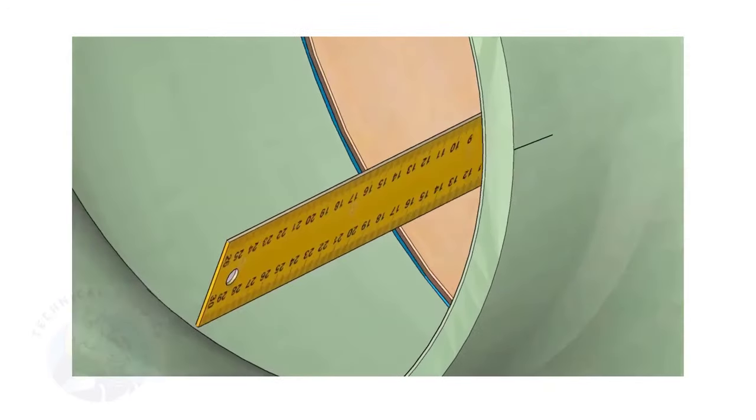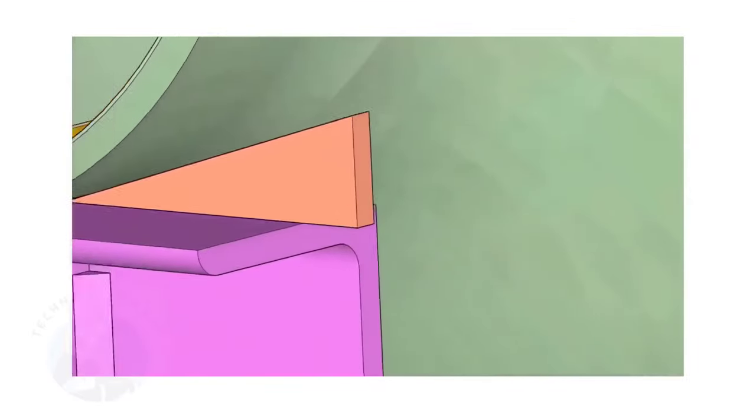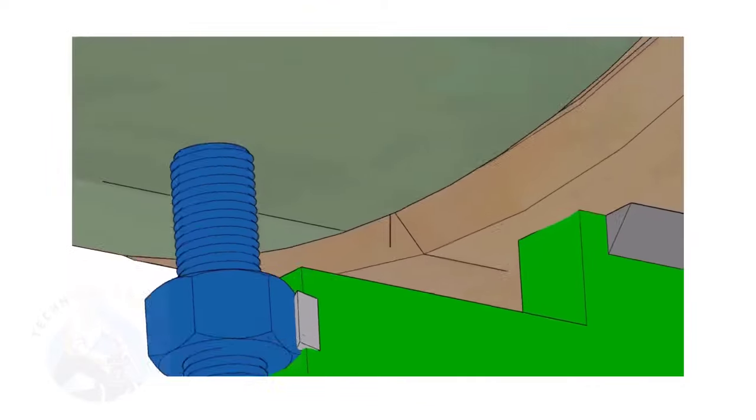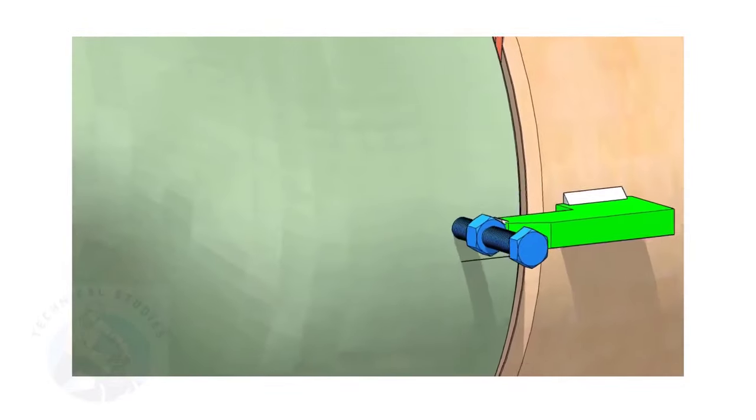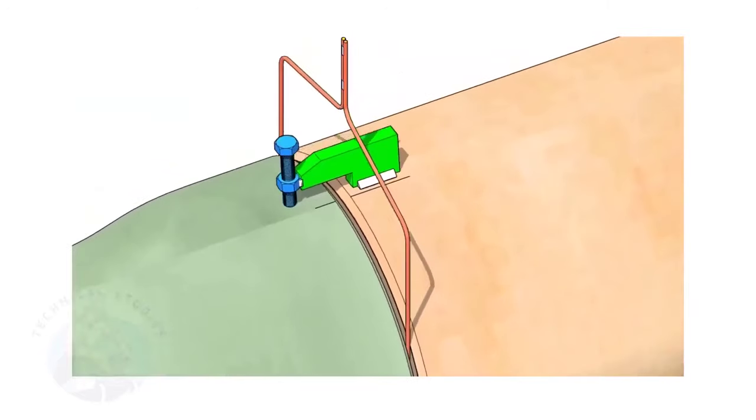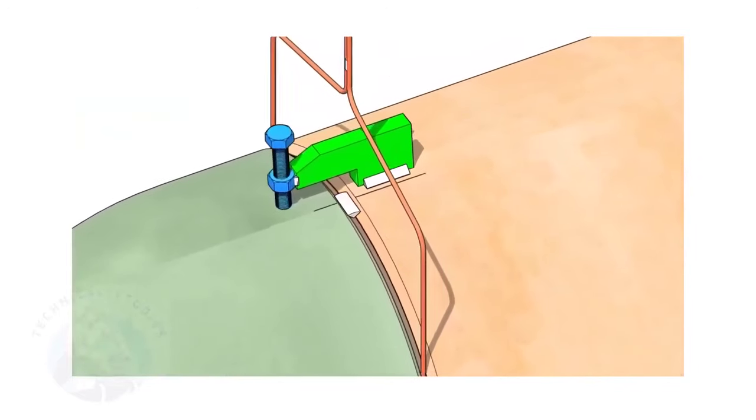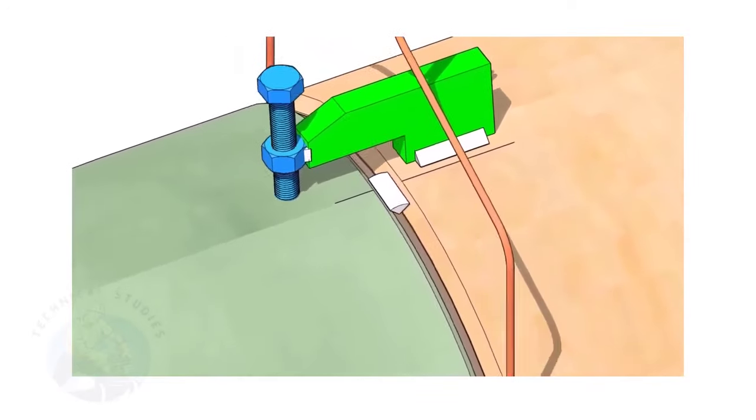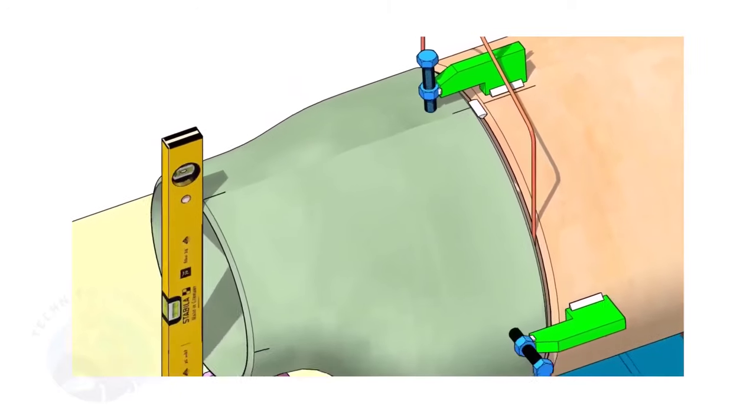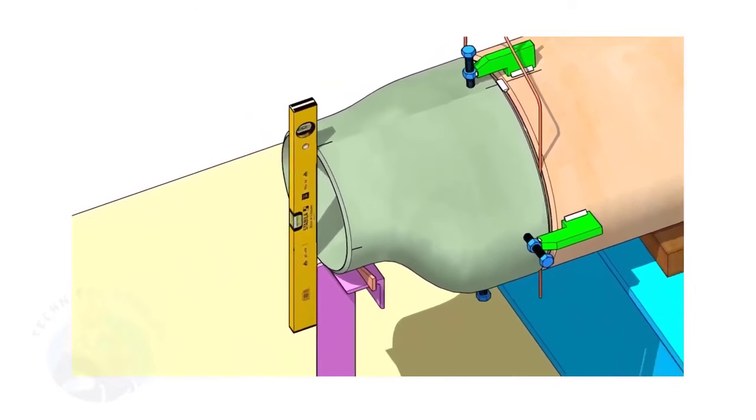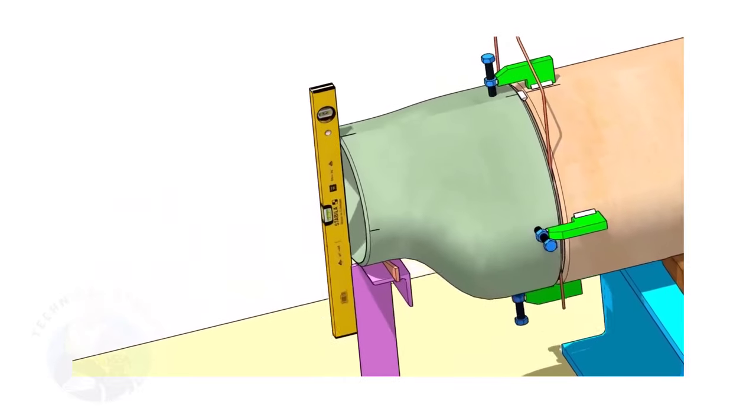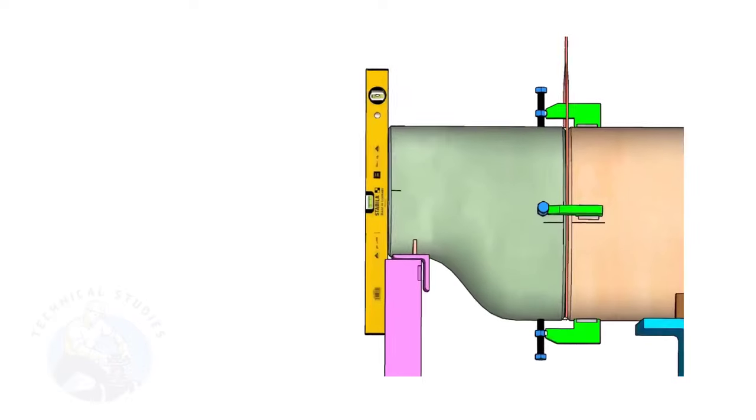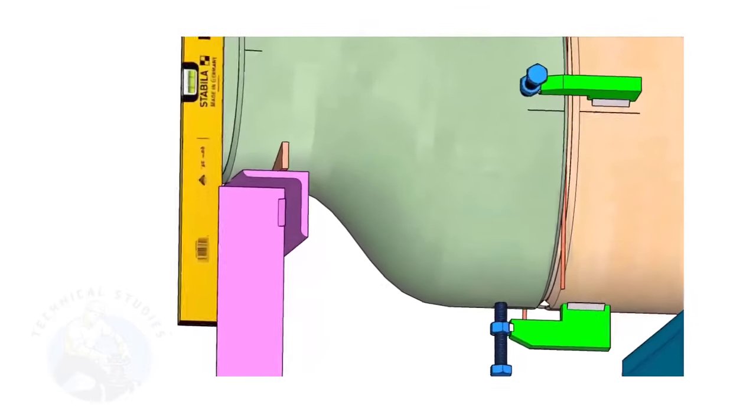By adjusting the jack bolts, correct the overlap of the joint inside the pipe. Now, tack weld on the top side of the joint. Correct the levelness of the outer face of the reducer. Tack weld on the bottom side of the joint.